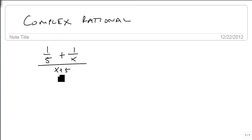We're now going to look at complex rationals. A complex rational is a rational on top of a rational. So something like 1 over 5 plus 1 over x, all over x plus 5 over 2.